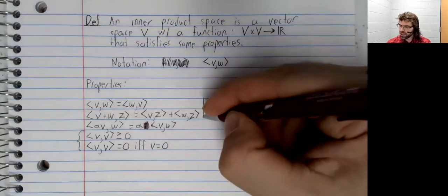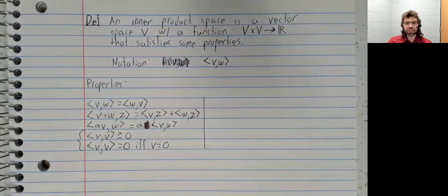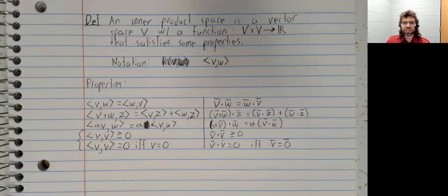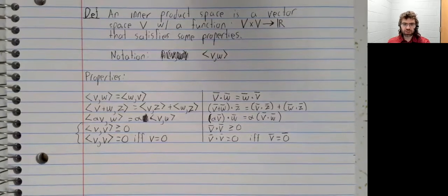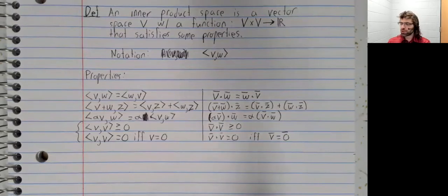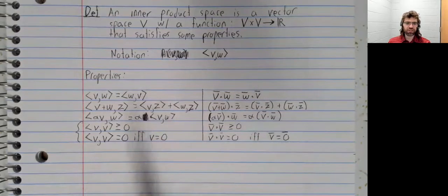Without any context, these properties might seem kind of arbitrary. But these are precisely the properties that the dot product has. So just as with vector spaces, when we went from column vectors and generalized that definition, here we're going from dot products and generalizing that definition.